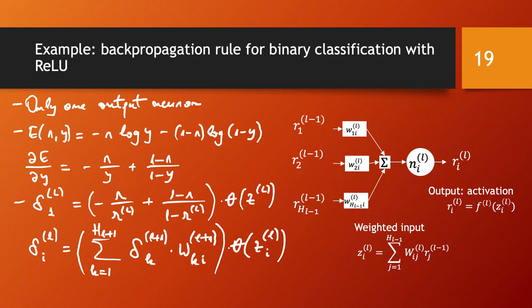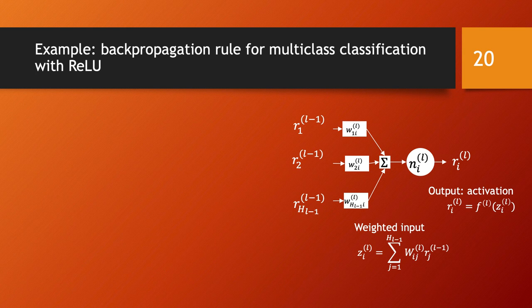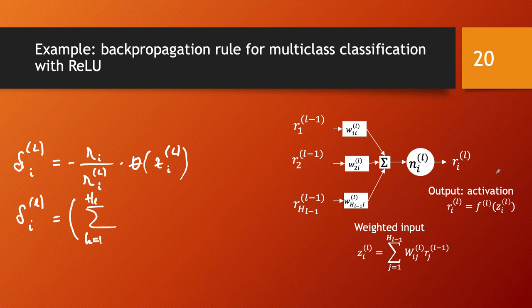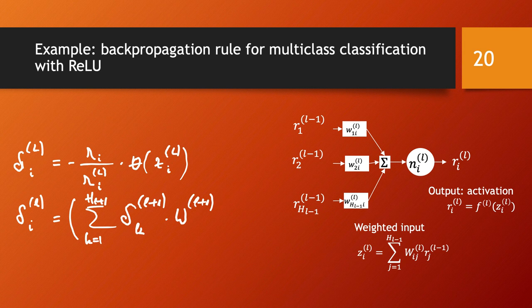One more example: backpropagation for multiclass classification with ReLU. The local gradient on the output layer for neuron i is minus r_i divided by r_{L,i} times theta(z_{L,i}). On a hidden layer l, neuron i, the rule is: the sum from k equal 1 to h_{l+1} of delta_{l+1,k} times the weight w_{l+1,ki} times theta(z_l_i).